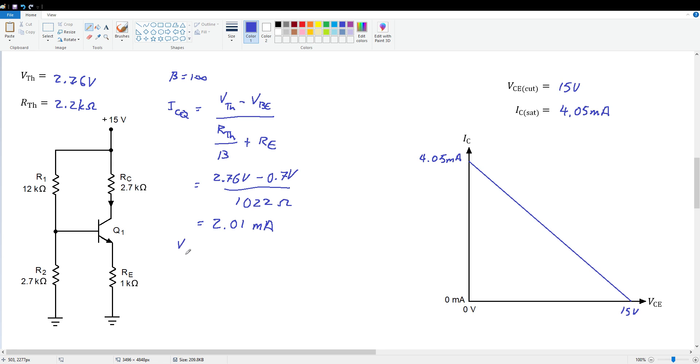ICQ is 2.01 milliamps and VCEQ is VCC minus ICQ times RC plus RE. So we've got 15 volts minus 2.01 milliamps times 3700 ohms. Crunching through these numbers, we get 7.56 volts. So there's our Q point, 2 milliamps roughly. On this scale, we just put it right in the middle, and this voltage is practically in the middle at 7.56 volts. So we've got a relatively centered Q point.